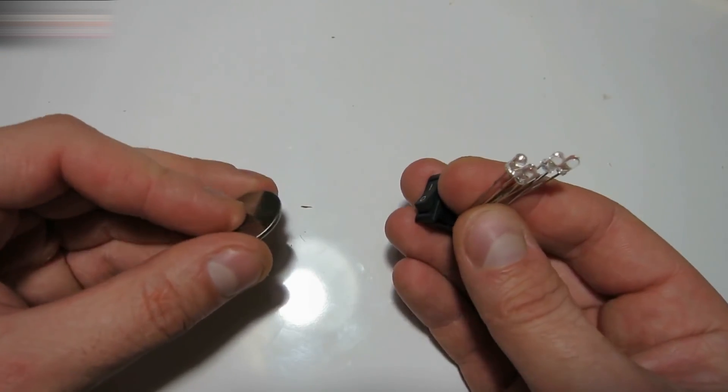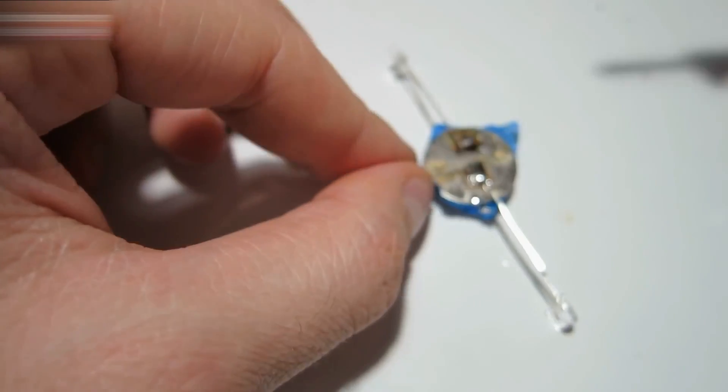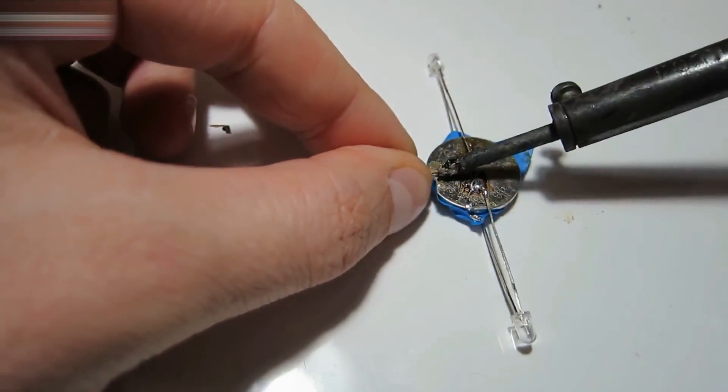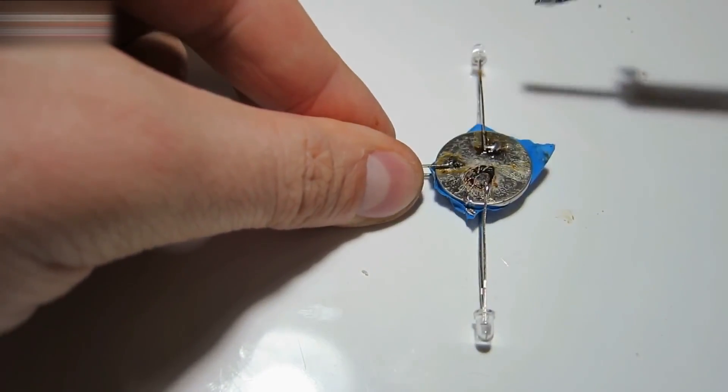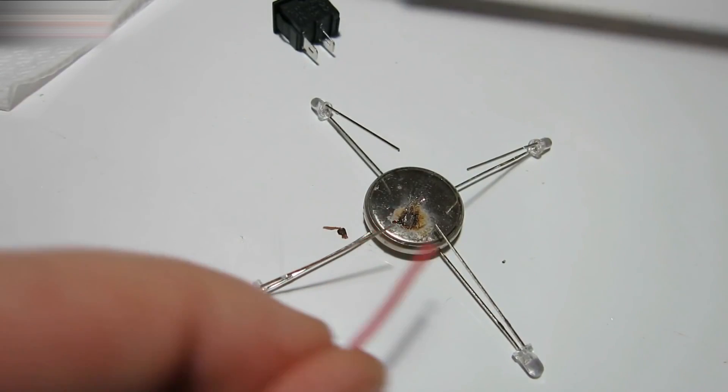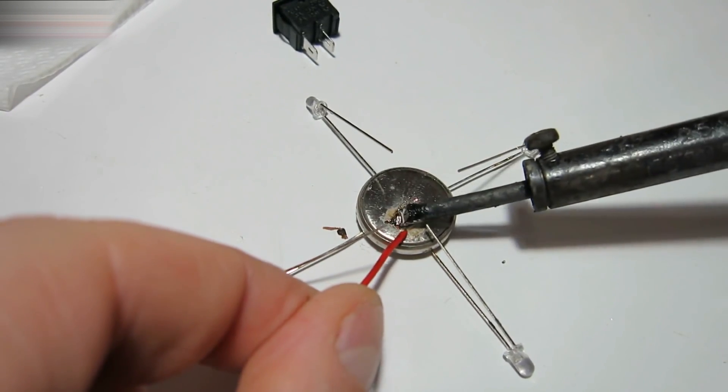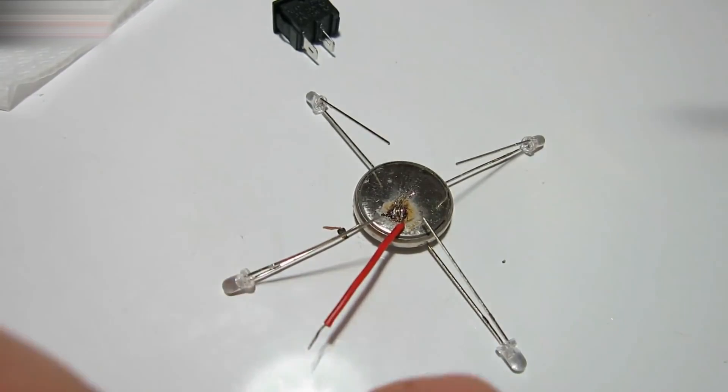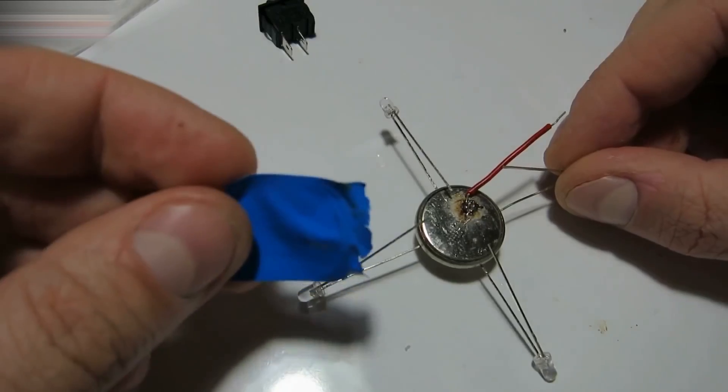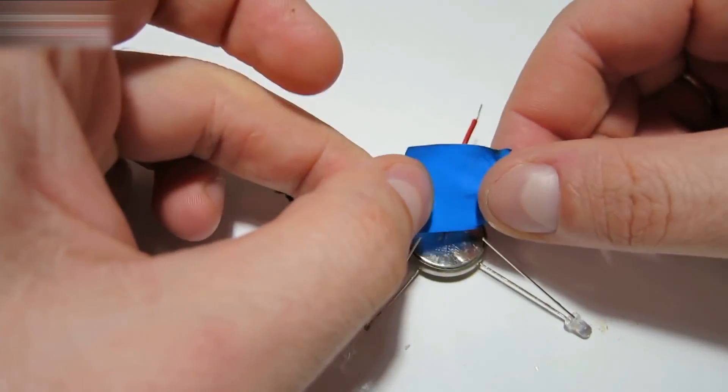Solder the LEDs, a switch, and the CR2025 battery together. These are the positive connections. Now make the negative connections. Solder a wire to the battery's negative side. Secure this connection with electrical tape.